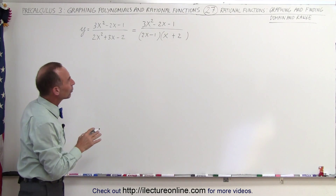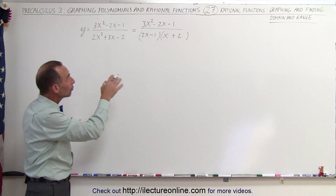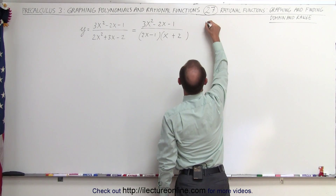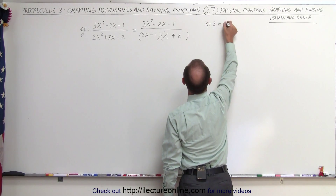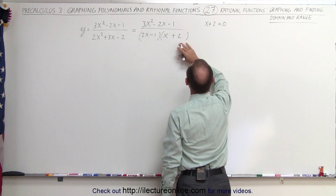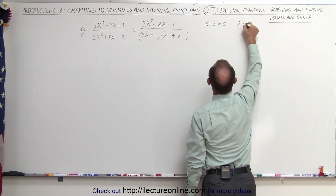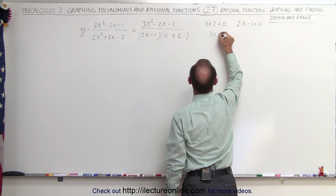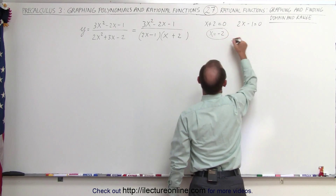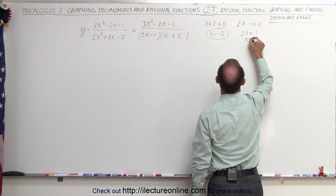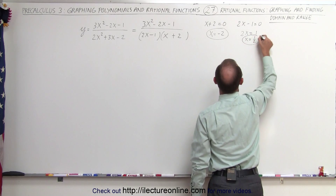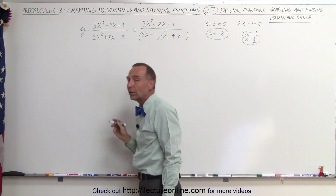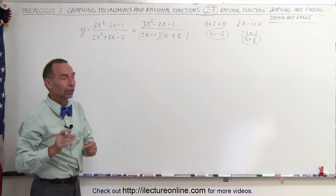From that we can determine what x cannot be, because if either of those two binomials equals 0, then we have a 0 denominator. So x plus 2 equals 0 will violate the denominator not being 0, and 2x minus 1 equals 0 would also violate that. So we have x equals negative 2 and x equals 1 half. That means x cannot equal negative 2 and x cannot equal 1 half — those determine the two vertical asymptotes.